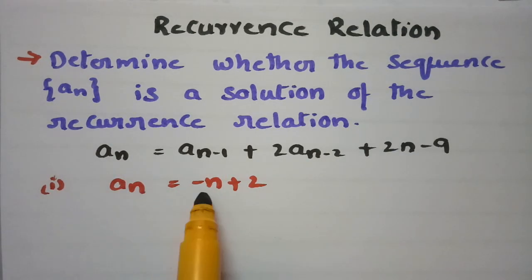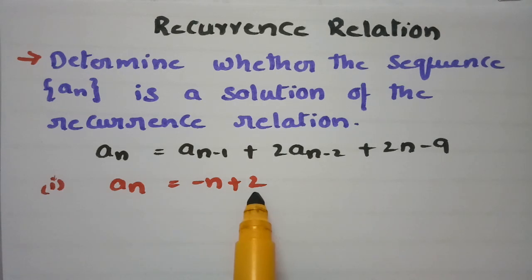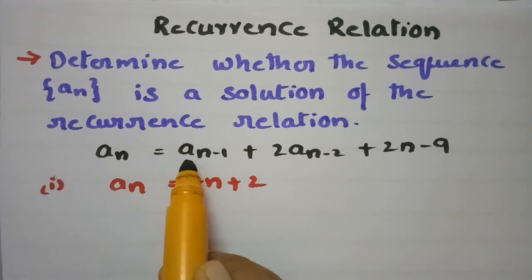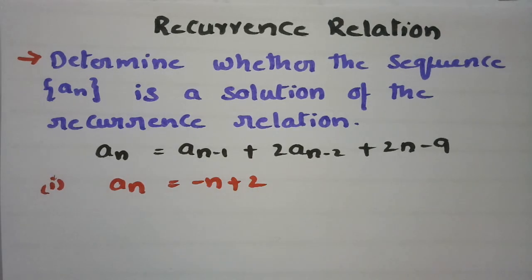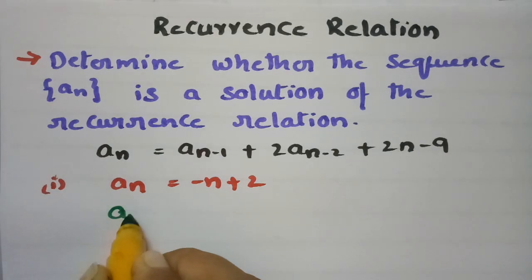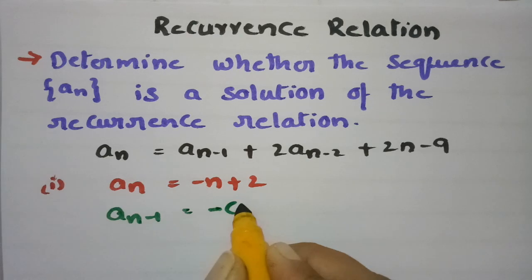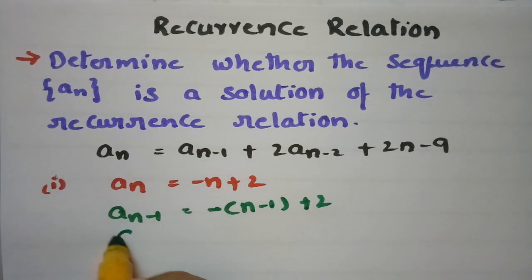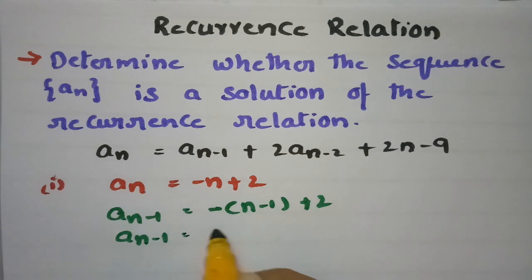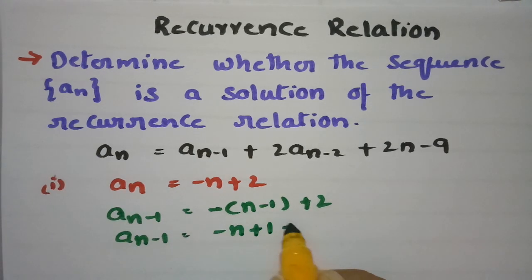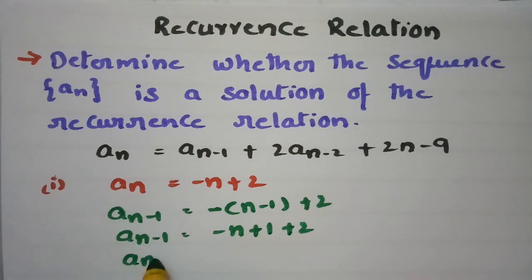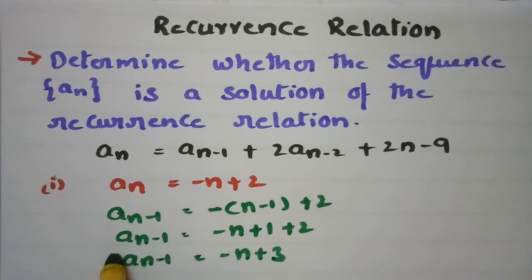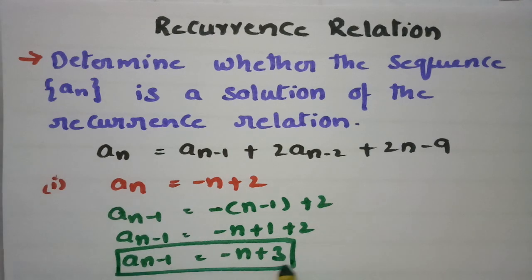We have An = -n + 2. So I will substitute An-1 here. The An-1 value will be -(n-1) + 2, which simplifies to -n + 1 + 2, giving us An-1 = -n + 3.